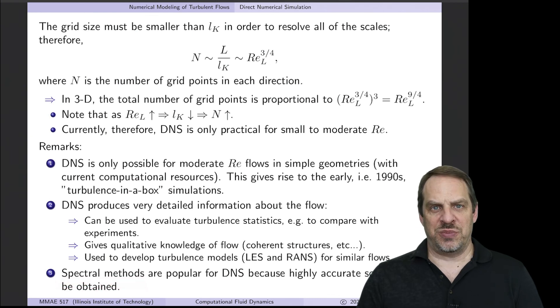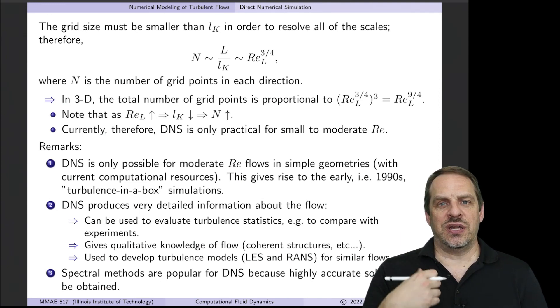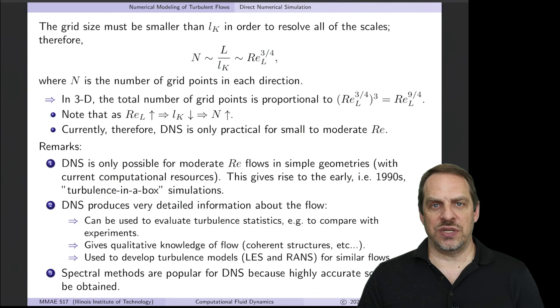The spectral method, which we've talked about before very briefly, is very popular for doing DNS. And the reason for that is because it has the spectral or exponential convergence rate, and you get highly accurate solutions for the Navier-Stokes equation. So spectral methods are very popular in the DNS context.